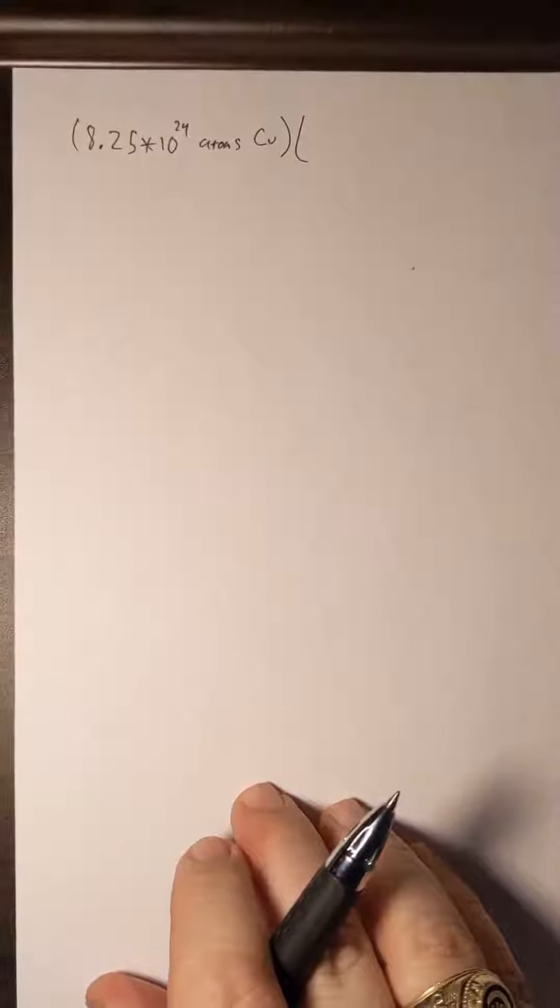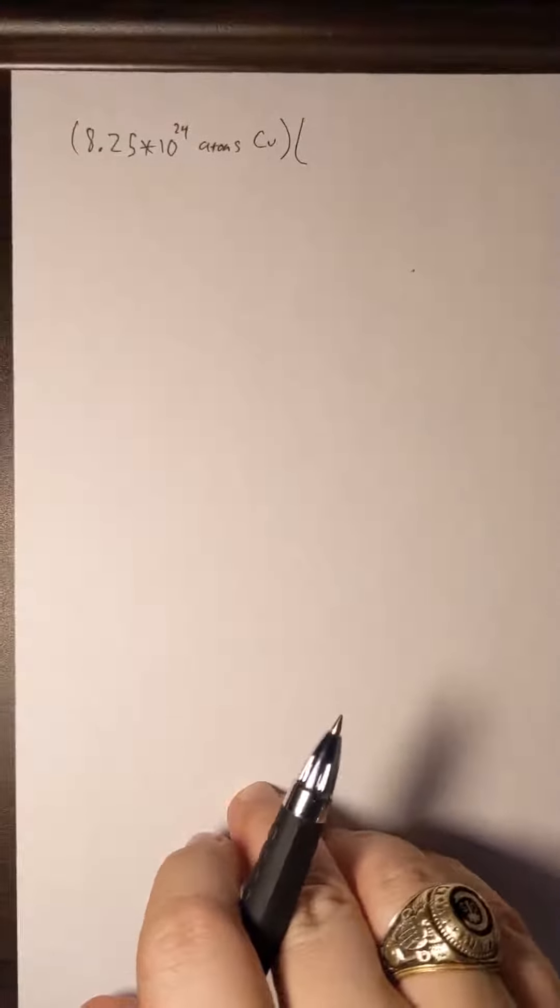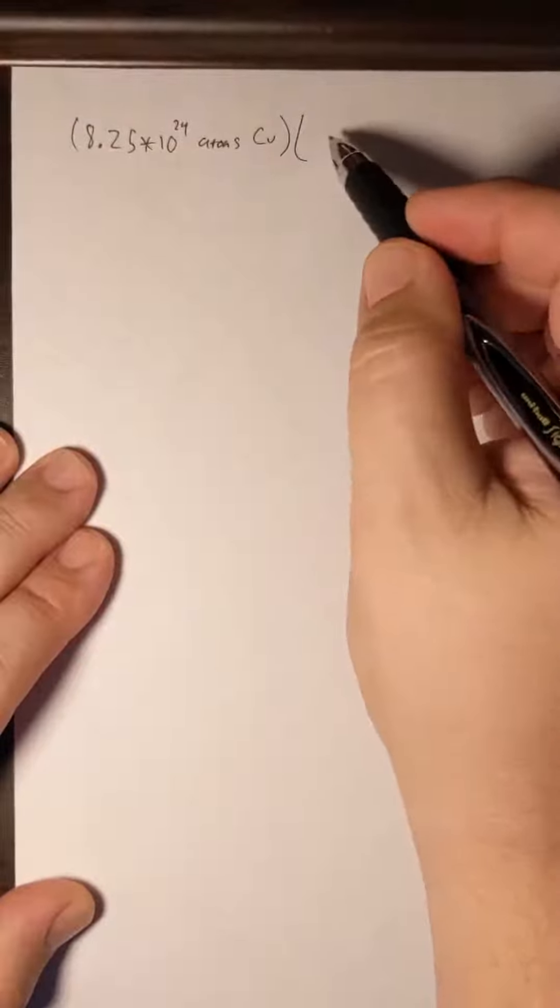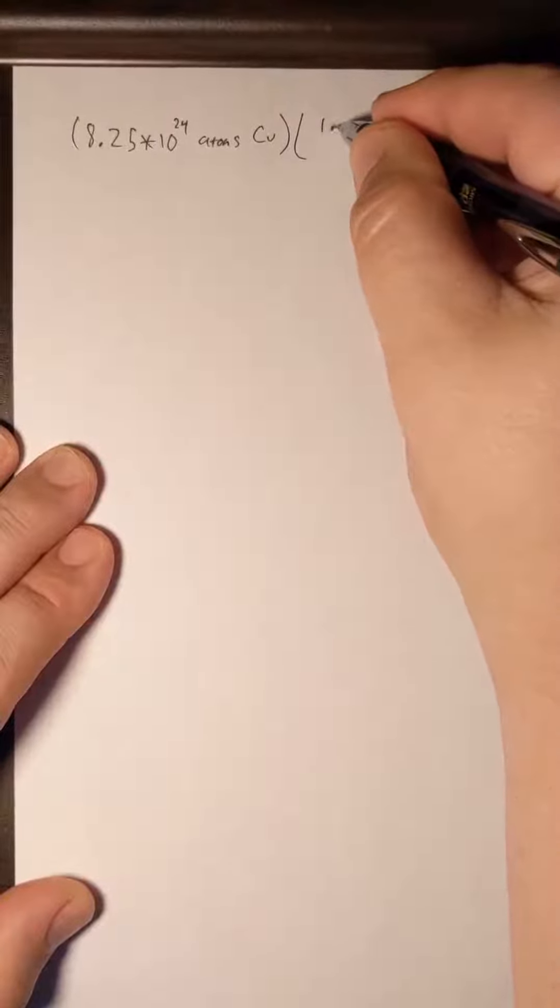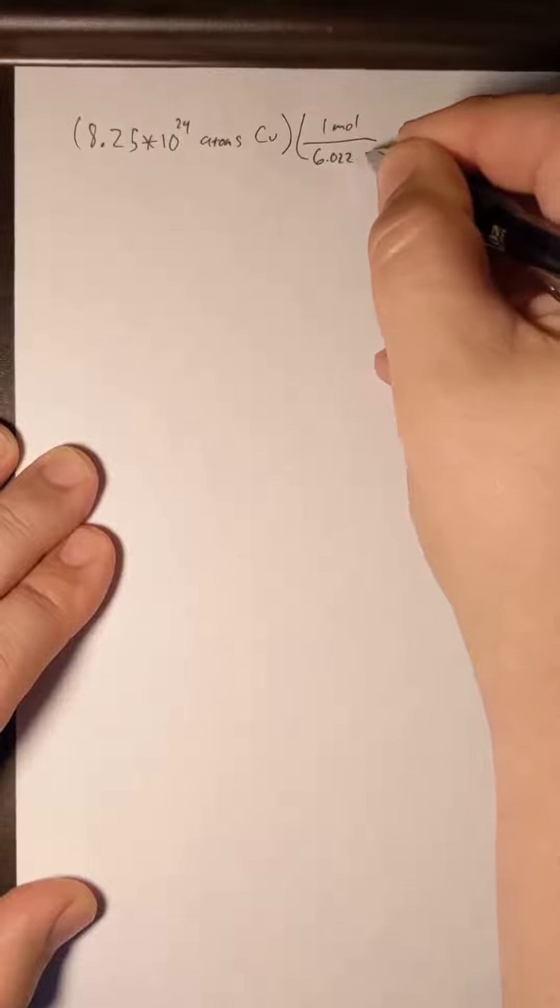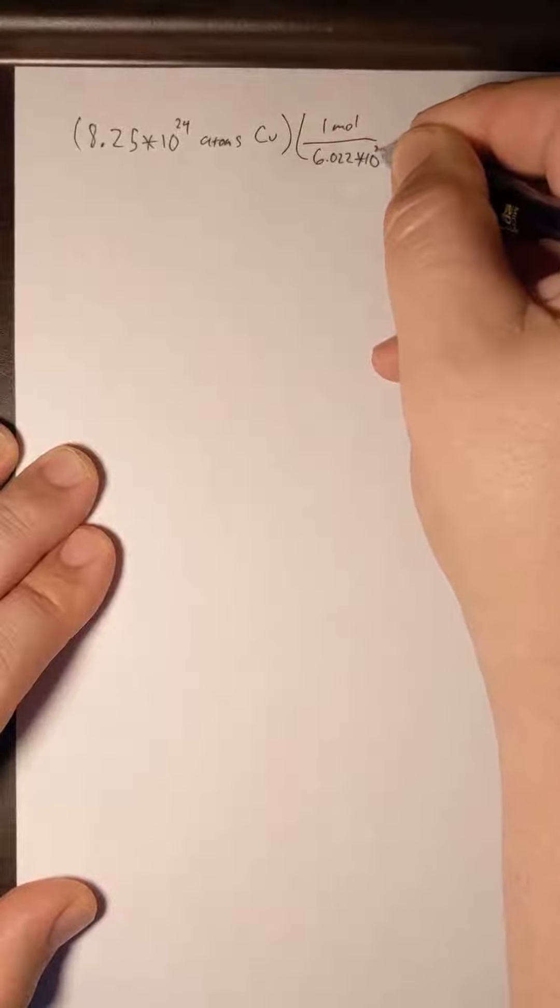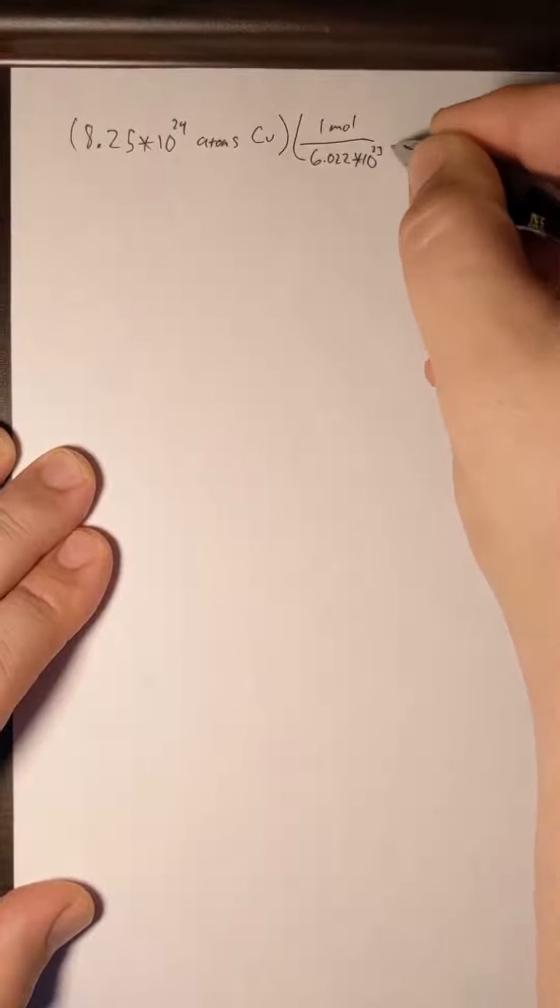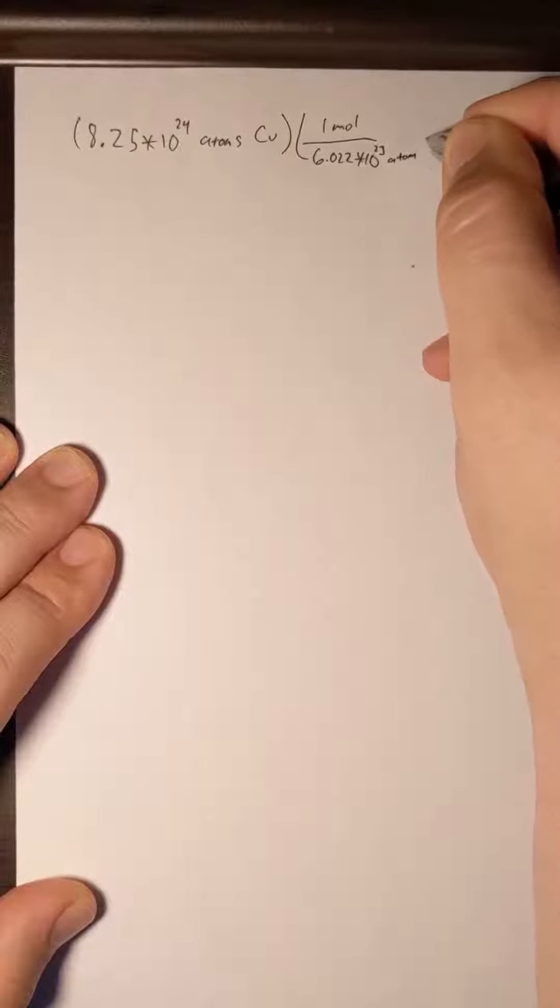And Avogadro's number is going to be involved here again, only this time because we have atoms as our unit and we want to turn it into moles. It'll be 1 mole over 6.022 times 10 to the 23rd. And our unit here will be atoms.